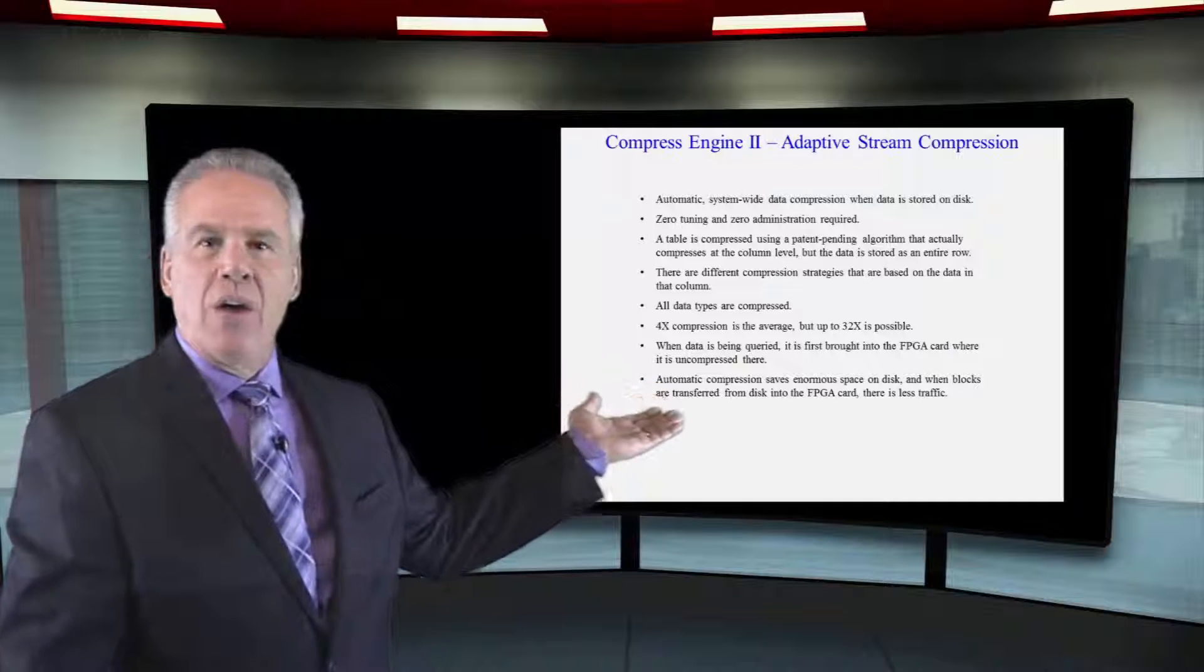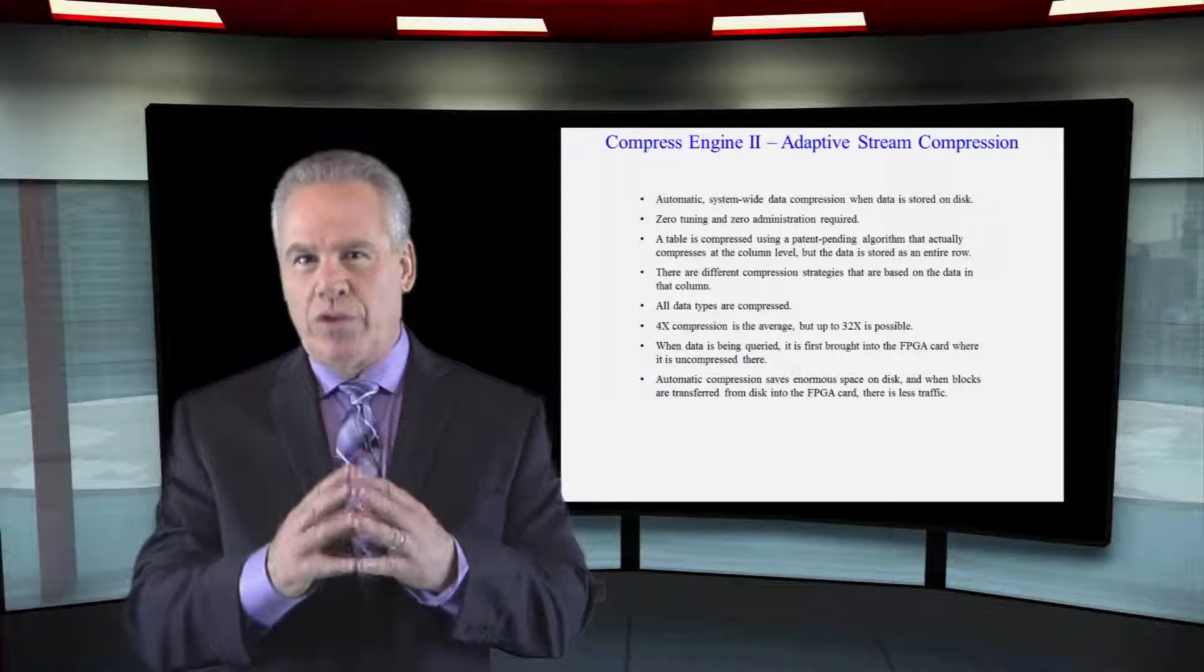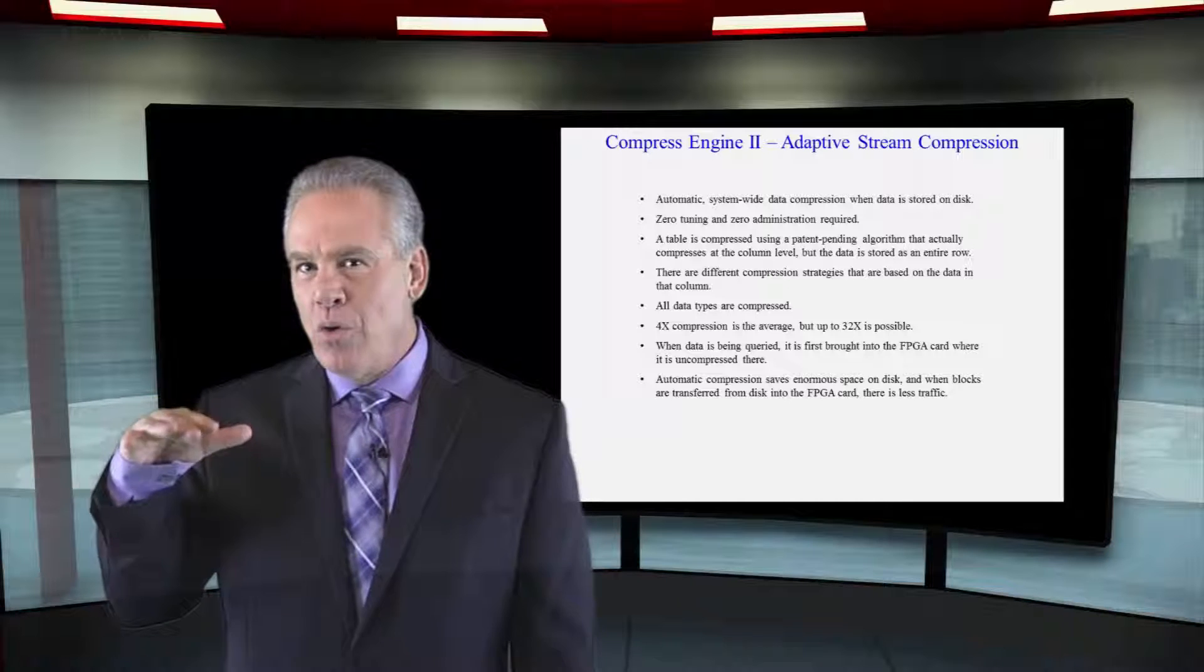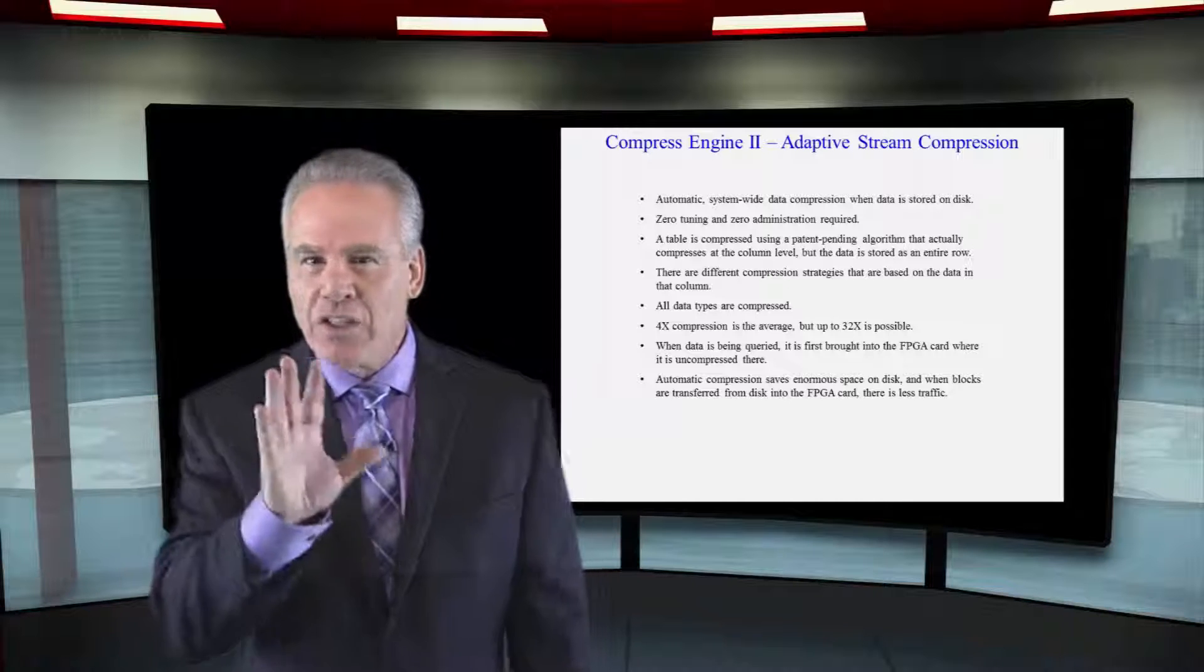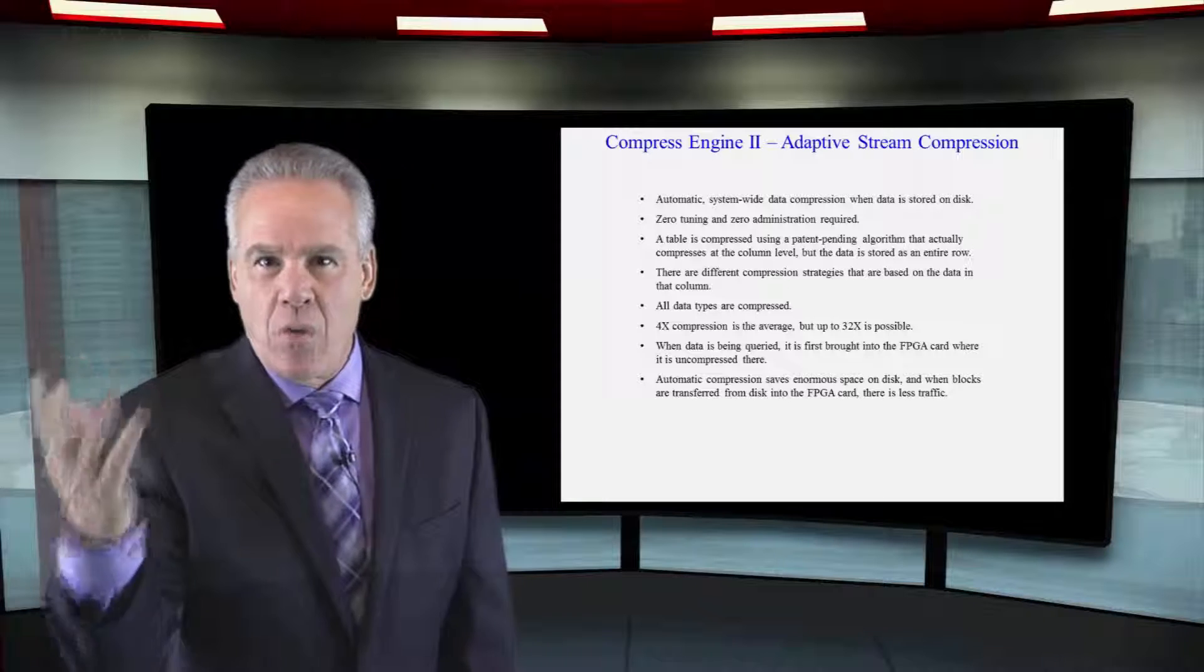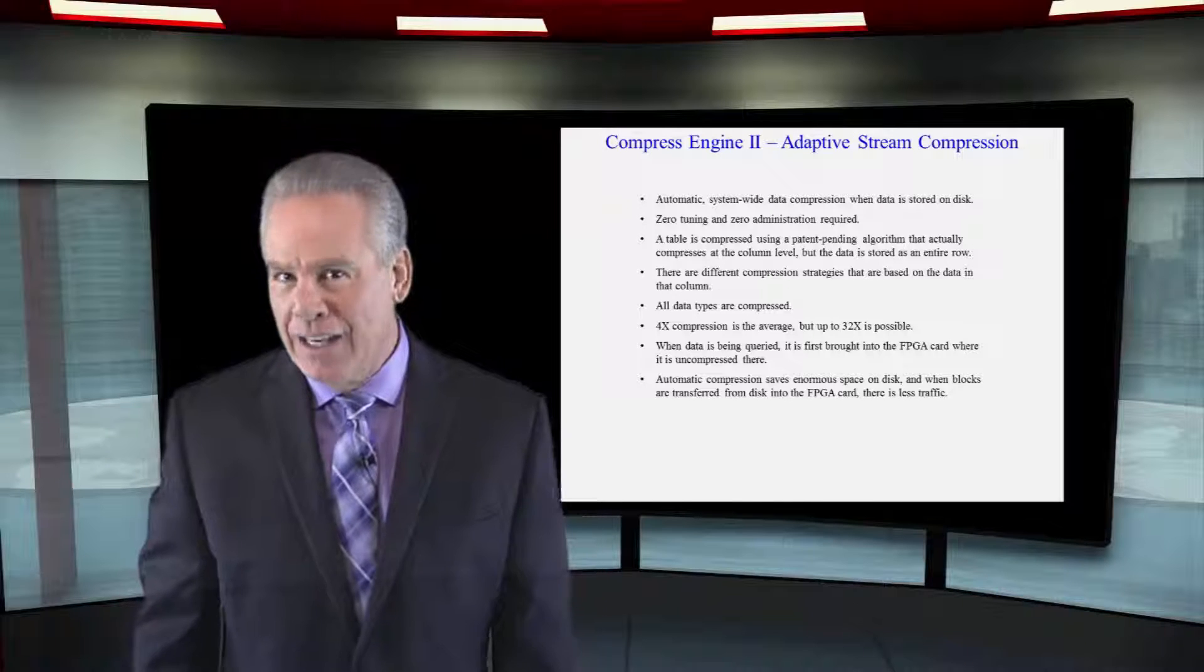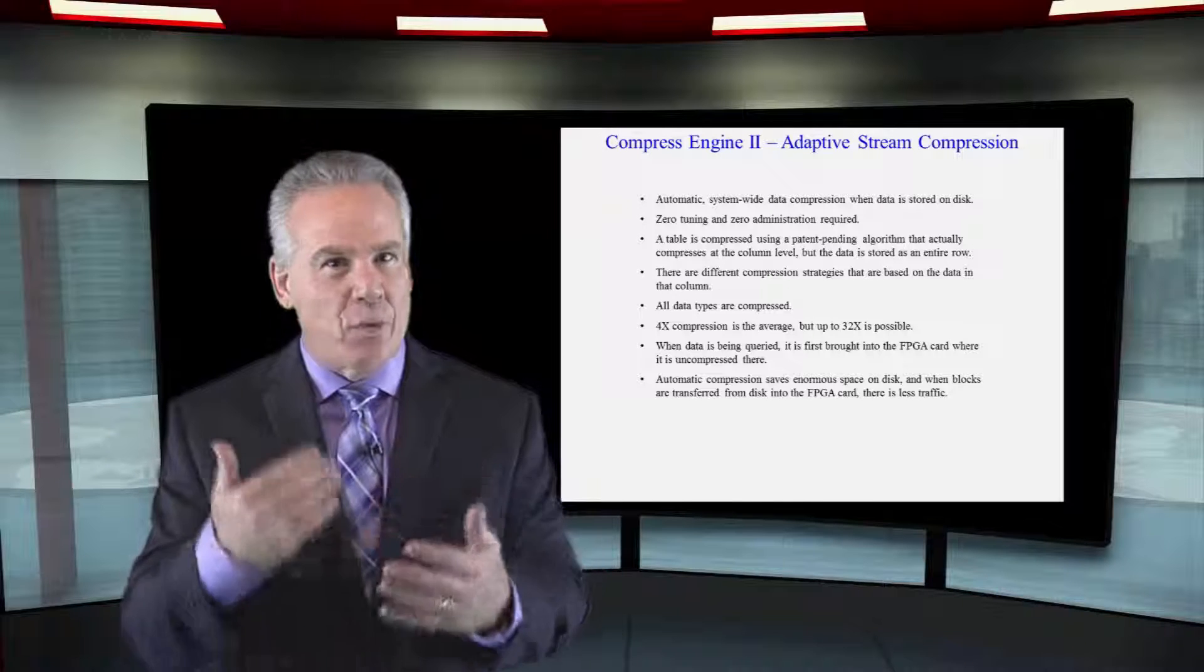Here's some information on how Netezza compresses things, but let's give you the real scoop. As data is being loaded into Netezza, they put the rows on different SPUs, but as those rows go in, they do the compression based on the column itself, and they've got a wide variety of these.